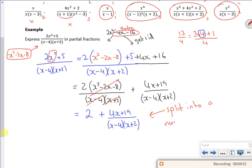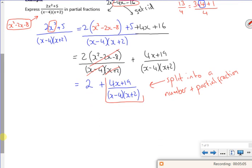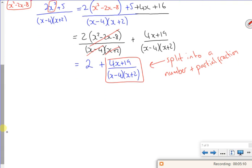I'll split it out. Now for us, we only get a number plus the partial fraction. Now what I want to do is partial fractions with this. So I want to do partial fractions just with that bit. So 4x plus 19, I've got two linear factors.